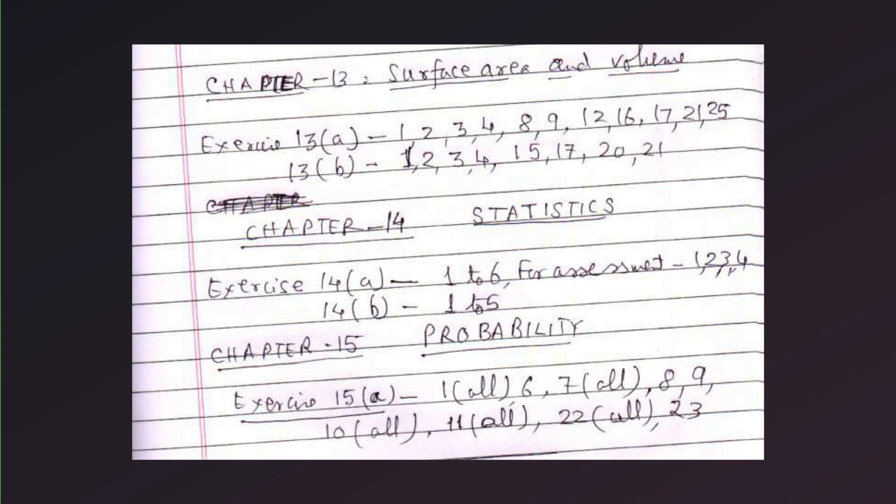Chapter 15, probability. Exercise 15, 1 all, question number 6, then 7 all, then 8, 9, 10 all, 11 all, 12, 22 all. And then return to 3.